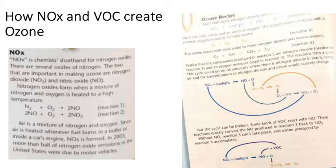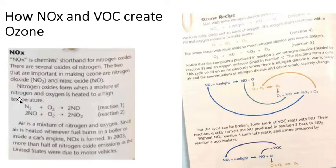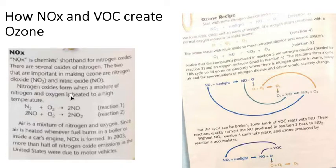How do NOx and VOCs create ozone at the lower level? NOx is shorthand for nitrogen oxide. There are two important nitrogen oxides in making ozone: nitrogen dioxide (NO2) and nitric oxide (NO). Nitrogen oxides form when a mixture of nitrogen and oxygen is heated to a high temperature. Here's our nitrogen, here's our oxygen — we get some heat and energy, and we get nitric oxide. Air is a mixture of nitrogen and oxygen, and whenever it burns in a fuel, boiler, or car's engine, we get this NO formation.